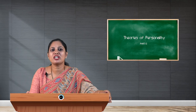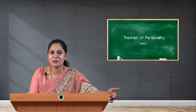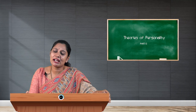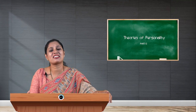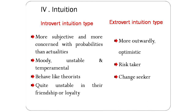Extrovert intuition type people are more outwardly very optimistic in nature. They take and hold all responsibilities; they are challenge seekers and risk takers. They try to achieve their goals because they express their feelings — if they want to express anything, they express it, including their happiness. These are people who are very trustworthy and very friendly.